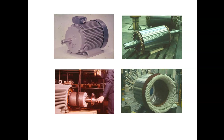The major difference between the DC motor and the induction motor is the source that is fed to the machine. In a DC motor we feed the motor with a DC power supply. However, for the induction motor we feed the machine with an AC power supply.